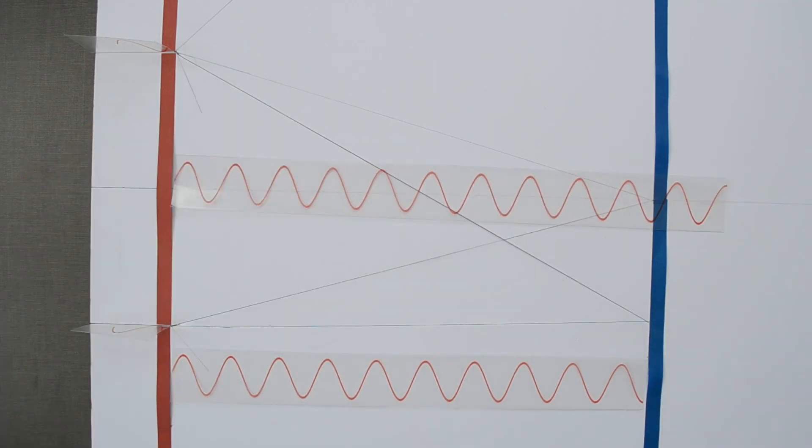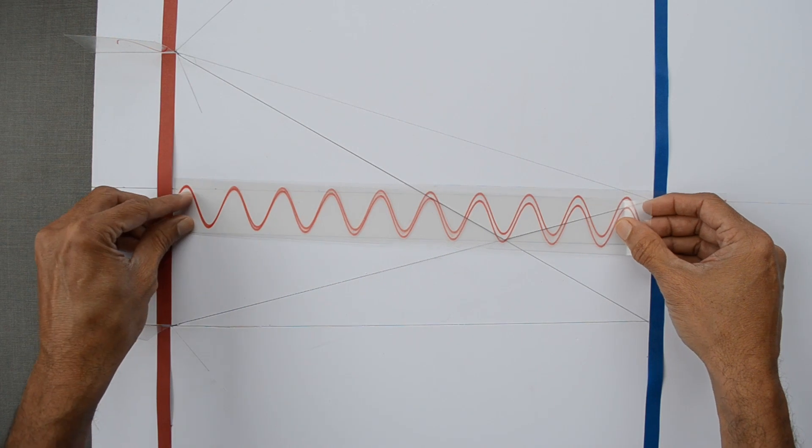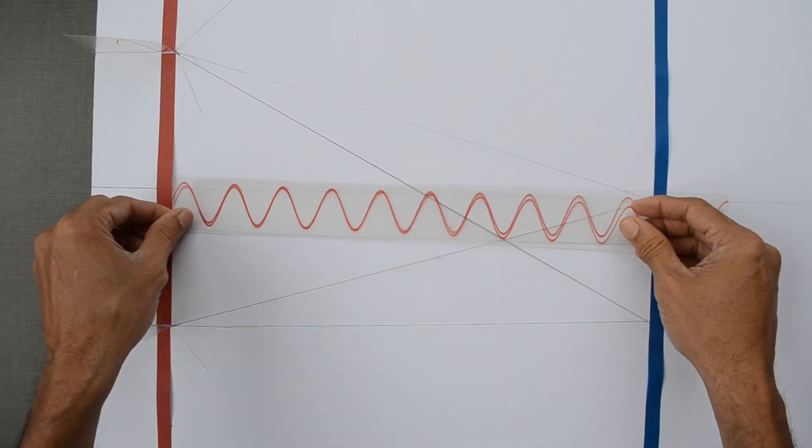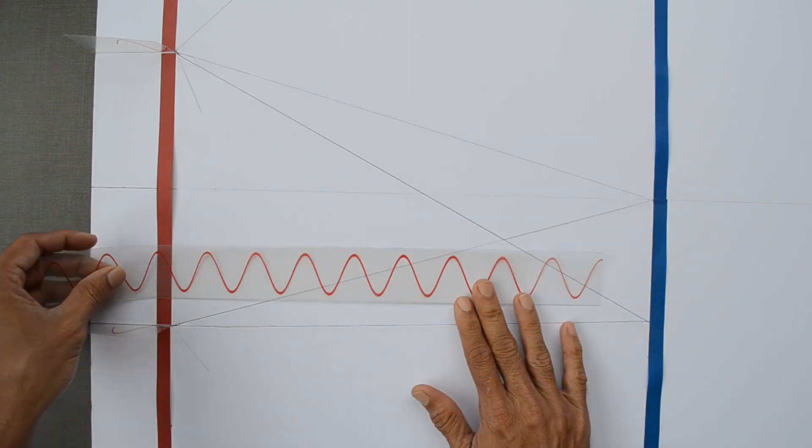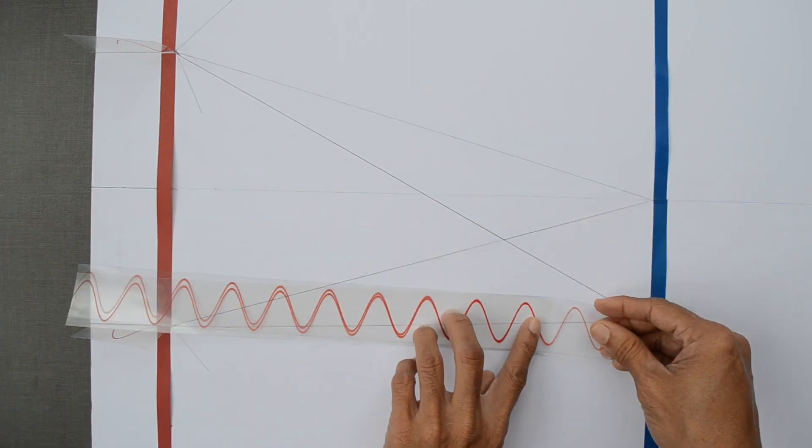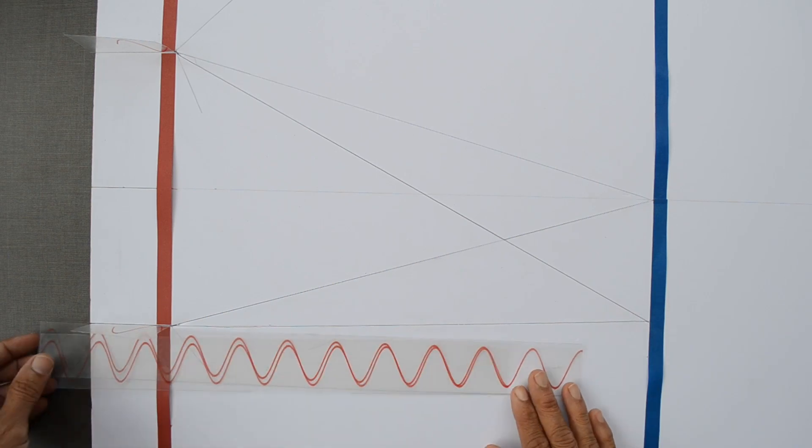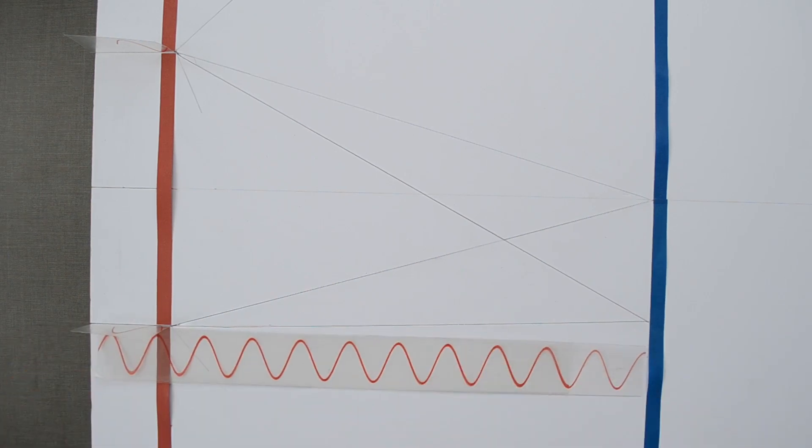When we overlap two waves, they have a difference of one and half wavelengths. Wave S1 has travelled one and half wavelengths more than S2.